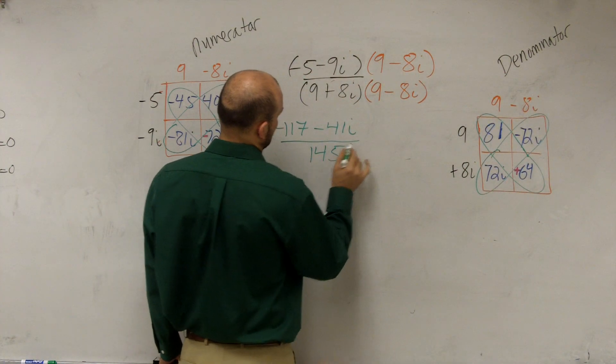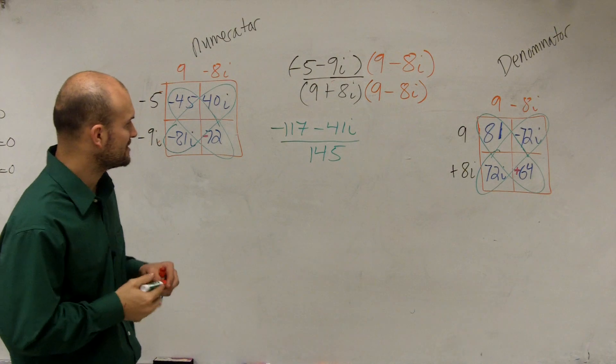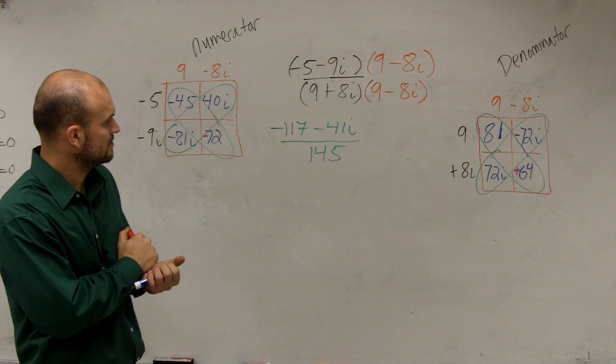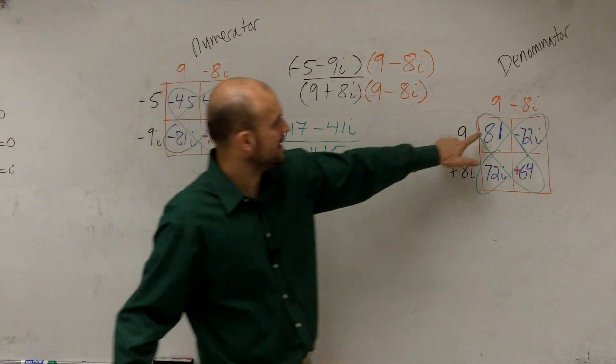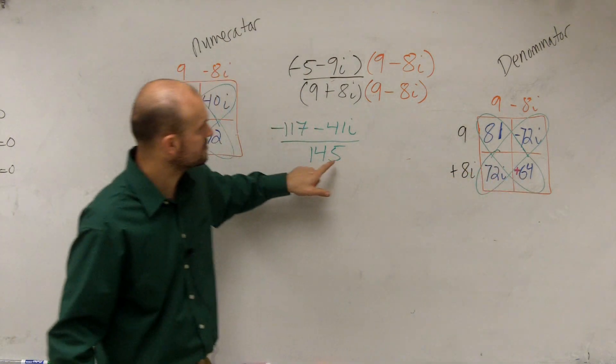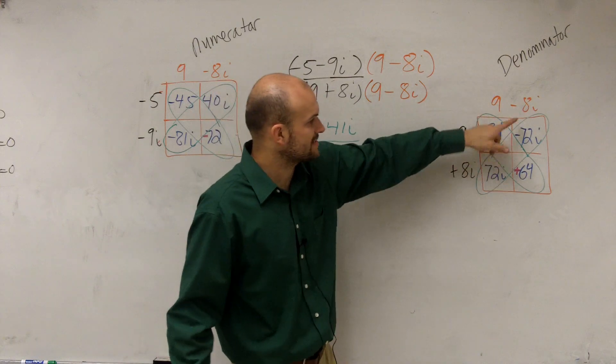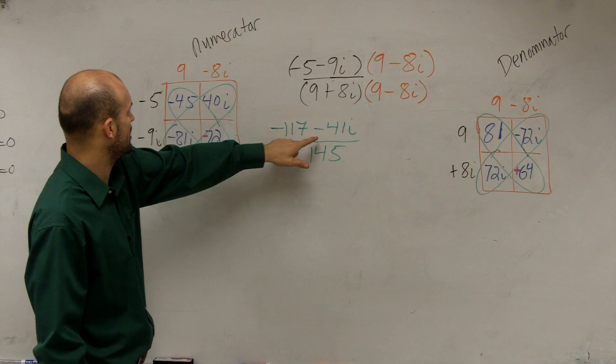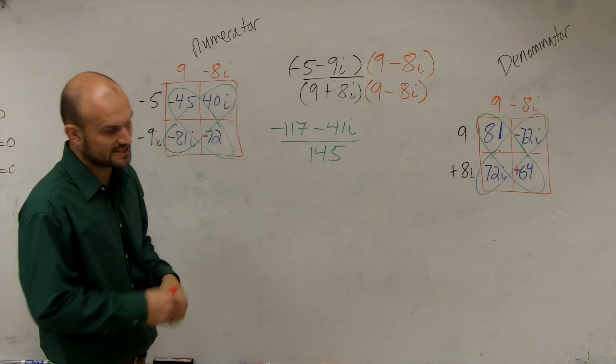Oh, this is a fun problem. And then we look to go and simplify this. And I don't believe I can simplify. So where did you get the 145? 81 plus 64 is 145. Because remember, this is for your denominator. These two cancel out, and these two add to 145. These two add to negative 41. These two add to negative 117.